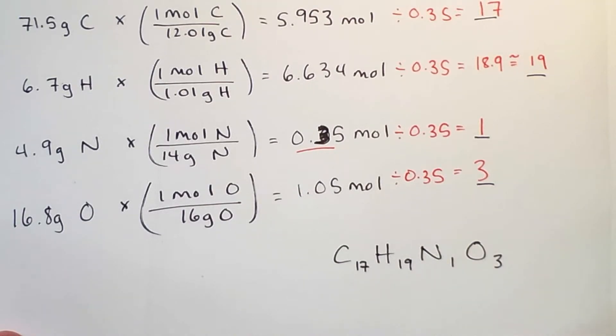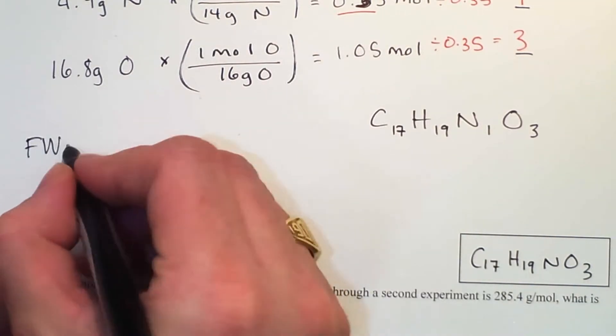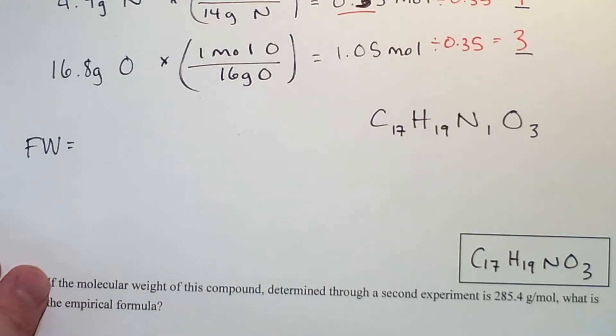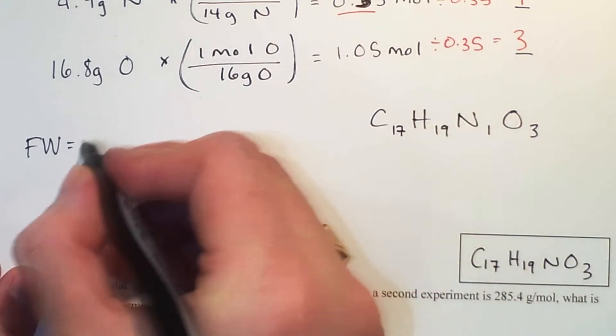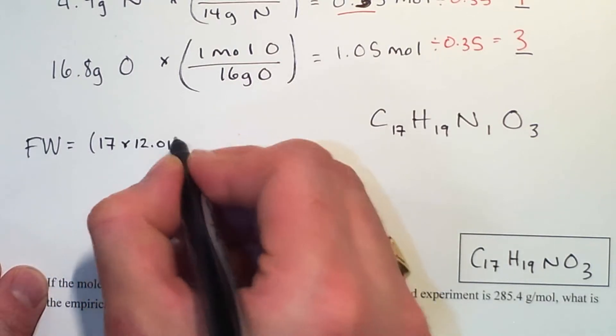So C17 H19 N O3 would be my equation. Now, just so we get into this idea as we move forward, we should calculate the formula weight of this.